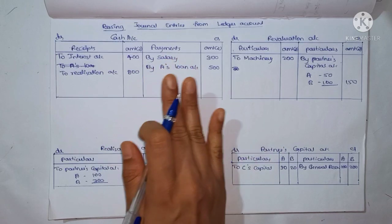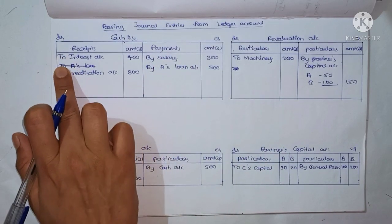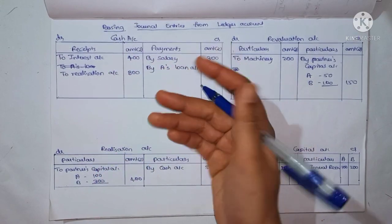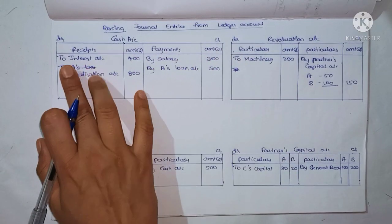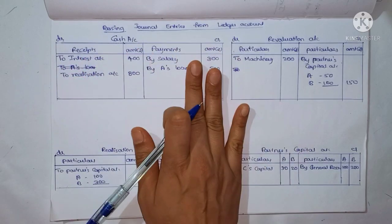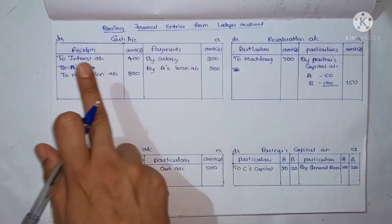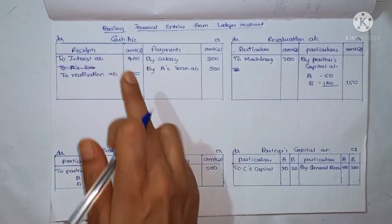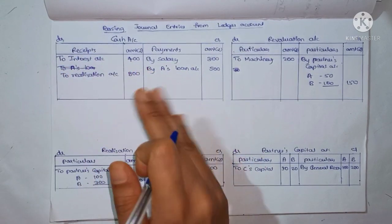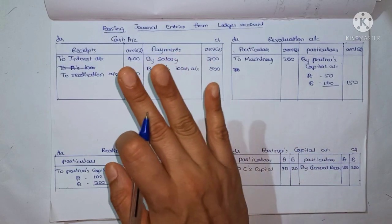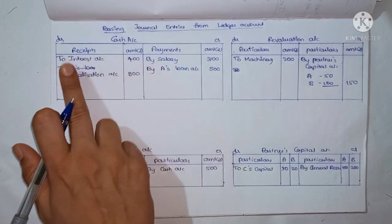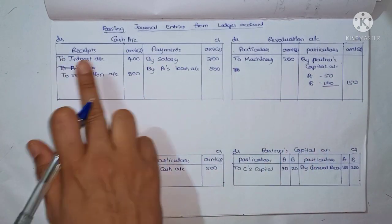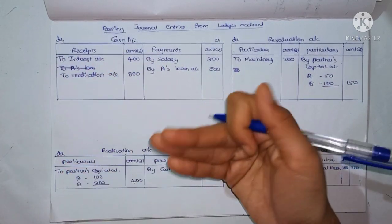In our old tradition, we have added 'To' on the debit side and 'By' on the credit side. In our new syllabus, we have added 'To' and 'By' as well. It is very easy to convert to the journal entry using this notation.